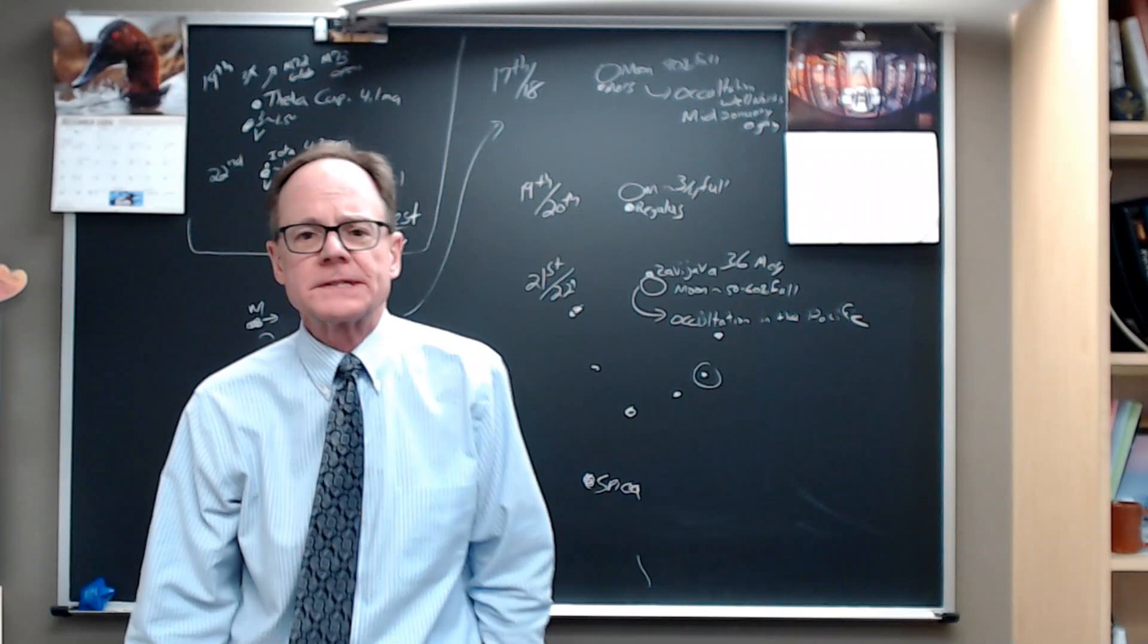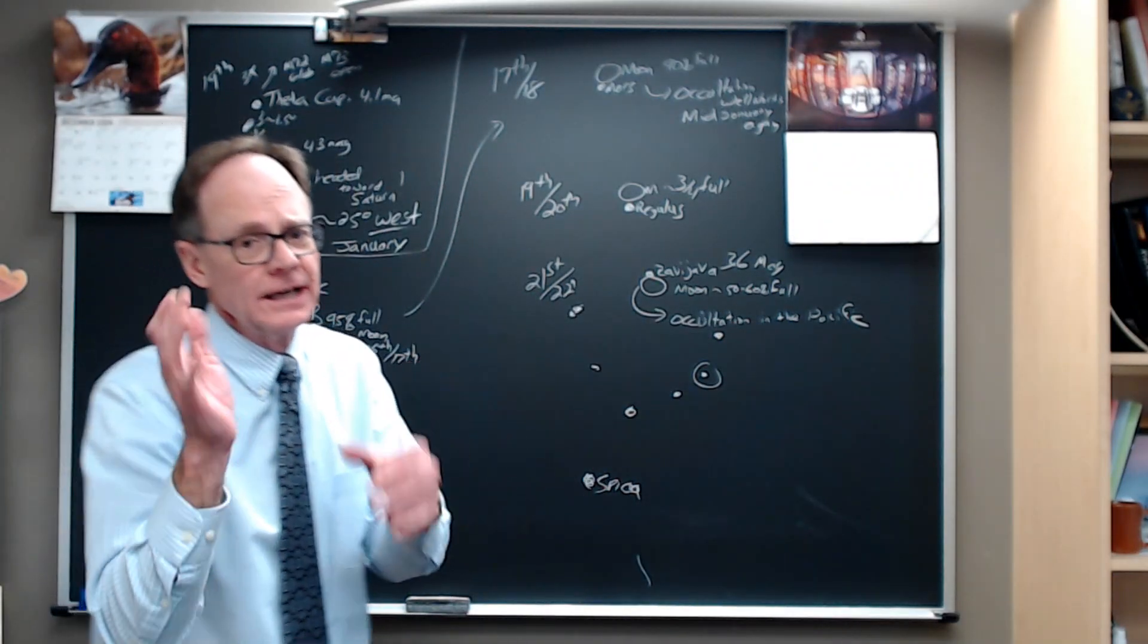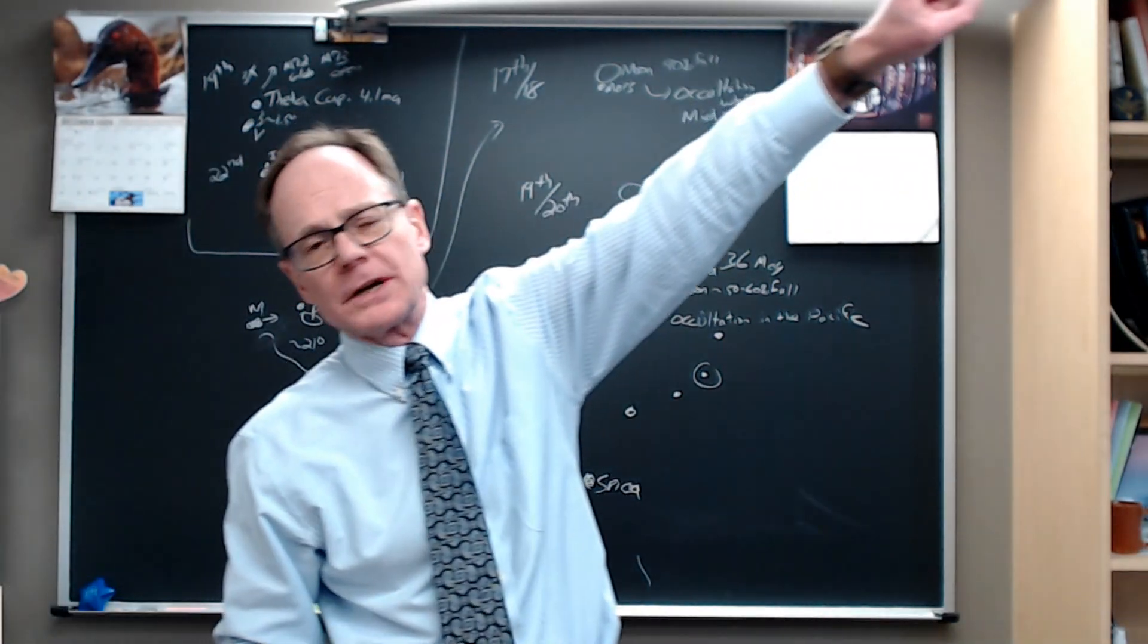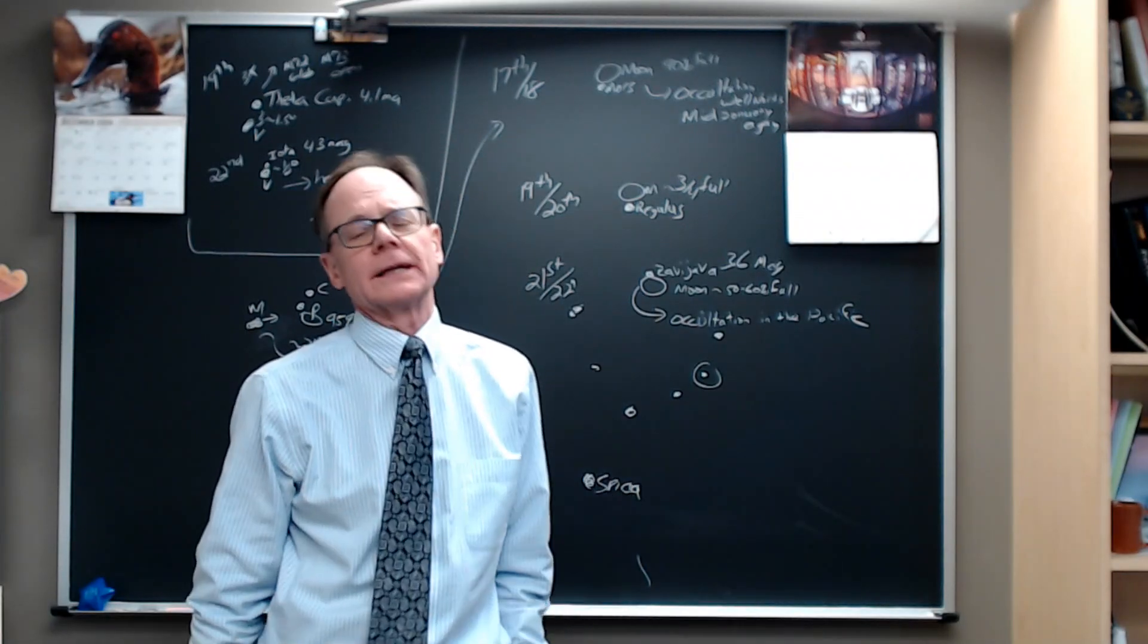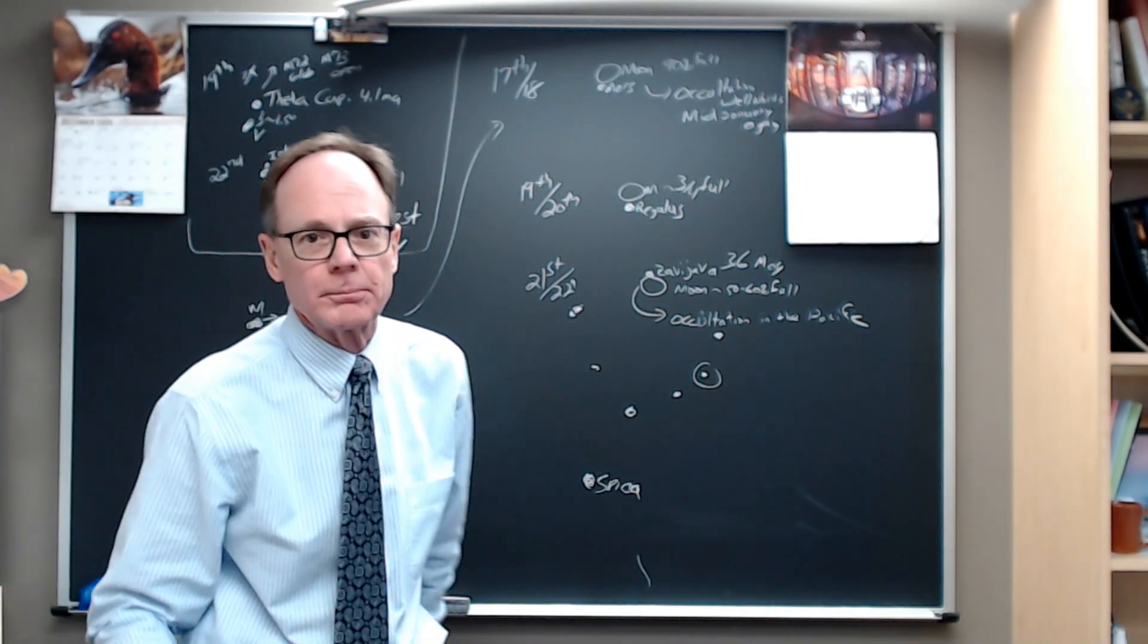Still quite a bit of moon interference this week, but let's start in the evening sky. You go outside just after dark, and there's Venus shining really brightly in the southwest. Venus is big and bright and beautiful.